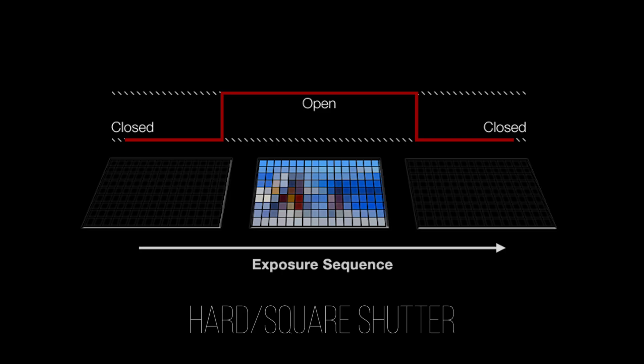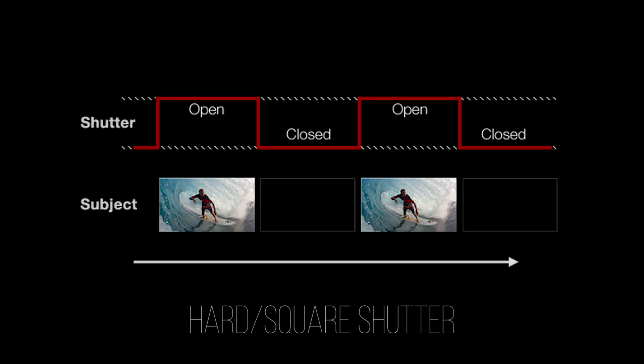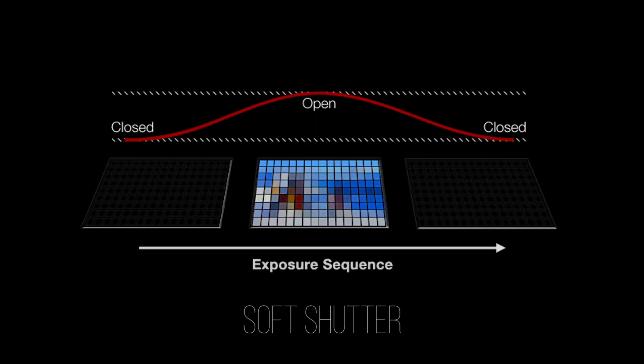A global shutter can work either by abruptly exposing and then obstructing all photo sites at once — in which case it can be thought of as a hard shutter, or as RED calls it, a square shutter — or by doing this more gradually as a soft shutter.